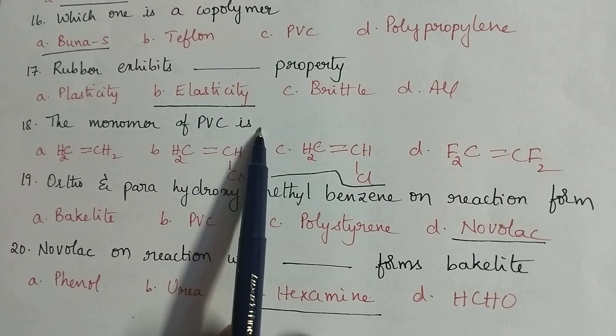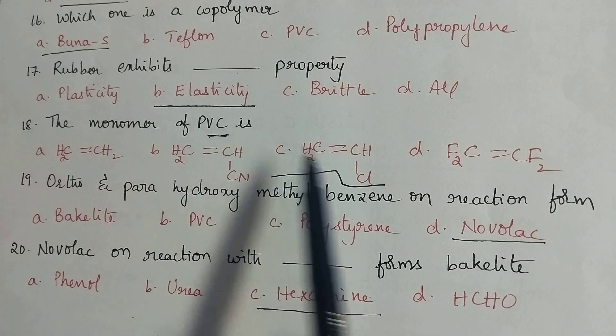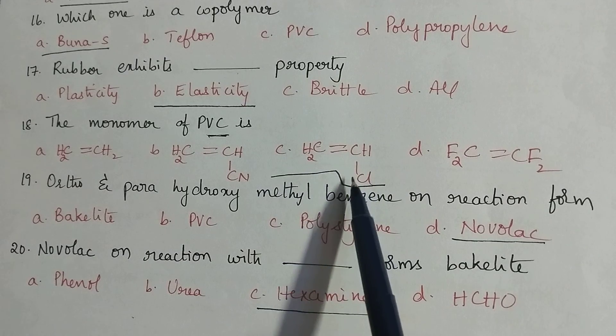The monomer of PVC is vinyl chloride and it is having the chemical structure as CH2 double bond CHCl. So option C is the right answer.